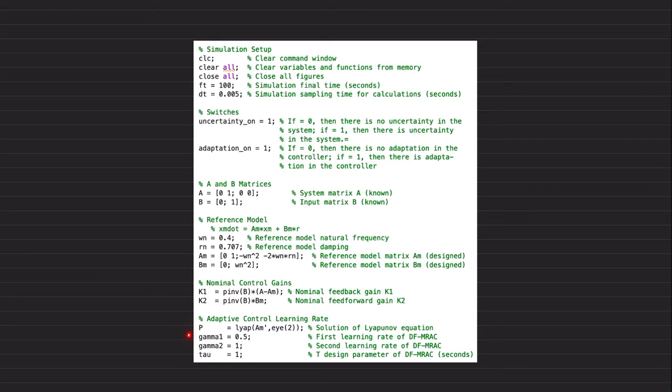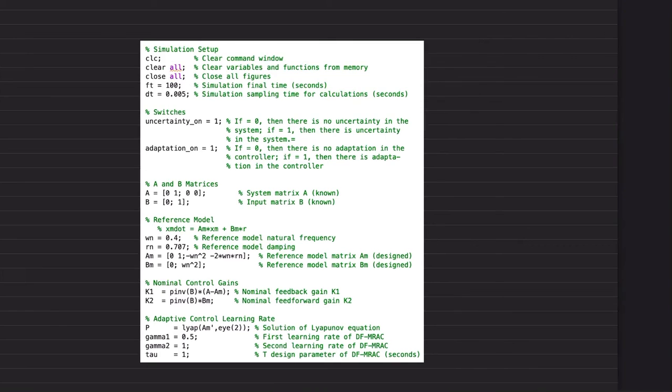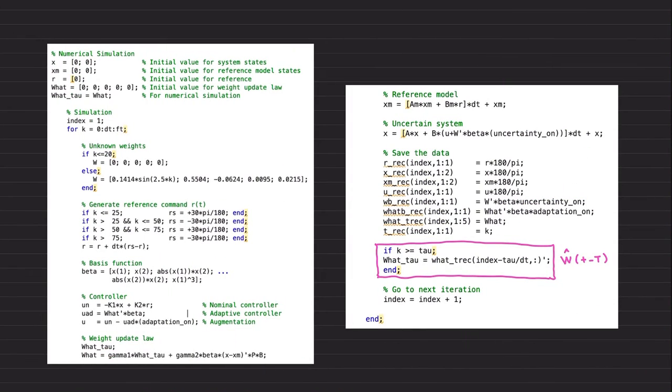solving the Lyapunov equation. I will start with these gamma one, gamma two, and Tau selections. This is the basically numerical example for wing rock dynamics. And this is the initialization.